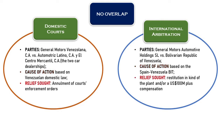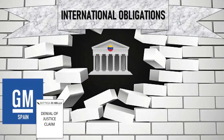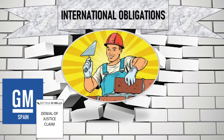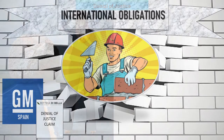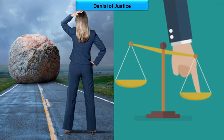Also, the relief sought in the arbitration may differ from the relief sought before Venezuelan courts. While in the domestic proceedings GM Venezuela was asking for the annulment of the courts' orders, in the international arbitration GM Spain may request the restitution in kind of the assembly plant and/or an adequate, prompt, and effective compensation amounting to the value of the expropriated plant. Further, it is because Venezuela breached her international obligations through her judiciary that GM Spain may put forward a denial-of-justice claim. A denial of justice occurs when state organs obstruct access to justice, hindering a foreign investor's right to bring a claim before a competent court or arbitral tribunal, or when state courts deprive a foreign investor of a fair and equitable procedure.